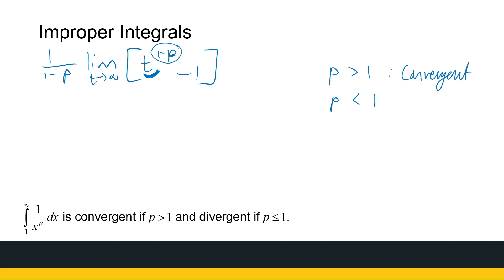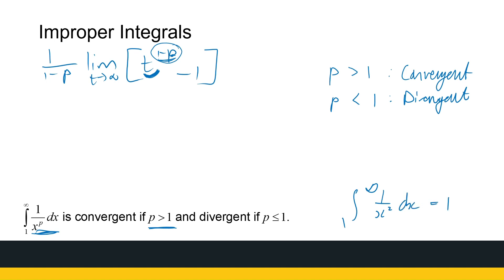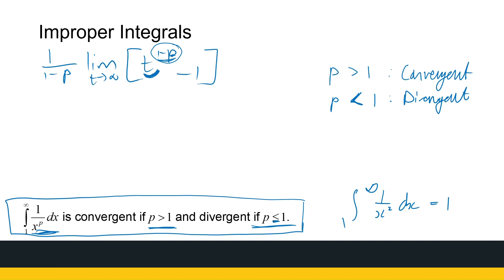If p is less than 1, the exponent (1 minus p) will be positive, and t to a positive power goes to infinity as t grows large — so it diverges. The conclusion is: this integral converges if p is greater than 1, as we saw for 1 over x squared, but it diverges if p is less than or equal to 1. Please remember this result, as we'll refer back to it when we look at the comparison test in the last video.